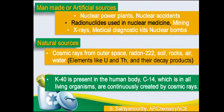Other man-made sources include mining of radioactive nuclide-rich minerals or ores, x-rays, medical diagnostic kits and nuclear bombs. The natural sources are cosmic rays from space, and radon-222 nuclei, soil, rocks, air and water which are rich in radioactive nuclides. Uranium and thorium are found in soil, and their decay products also produce severe radioactive radiations. K-40, that is potassium-40, is present in the human body; similarly C-14, which is present in all living organisms, is utilized in radiocarbon dating after the death of any animal to find out its age.